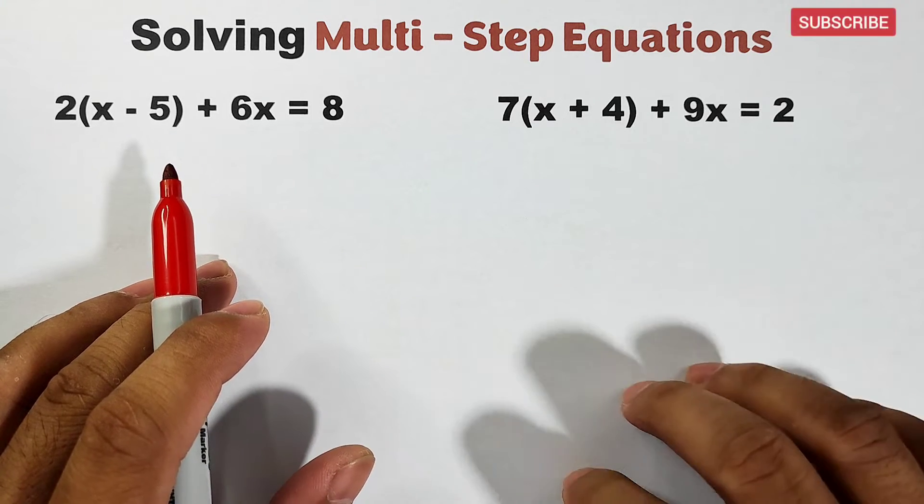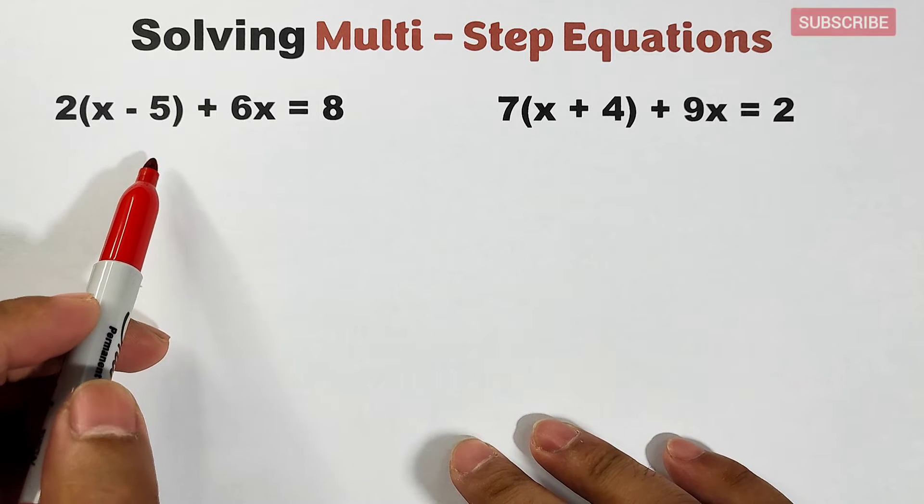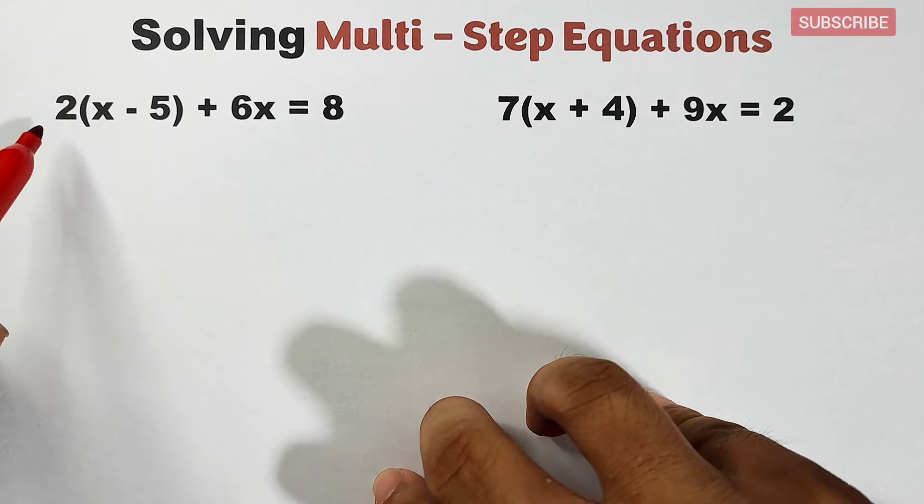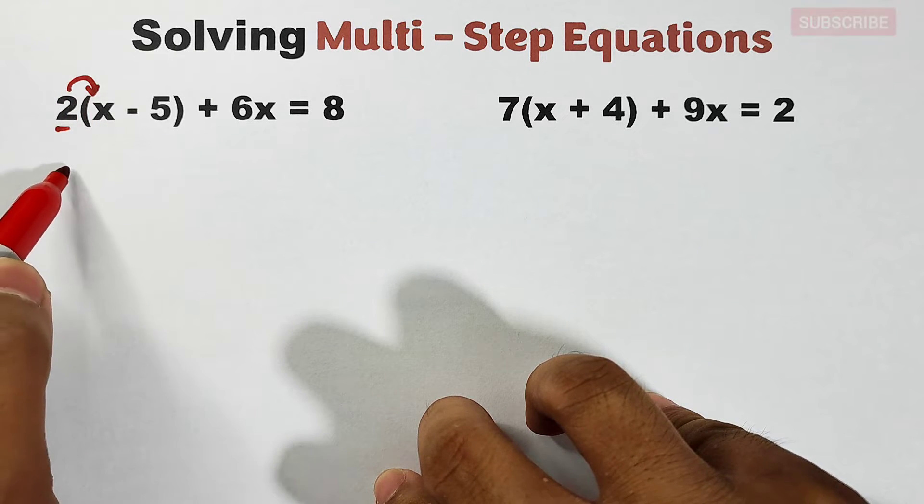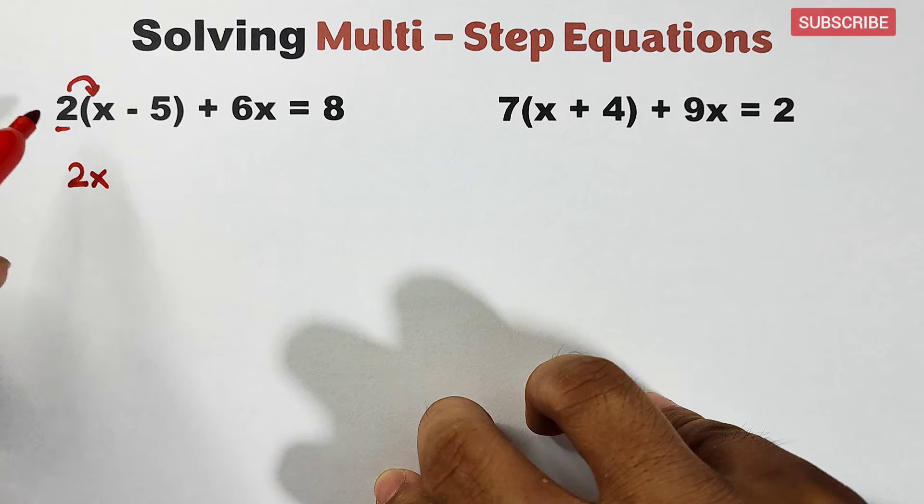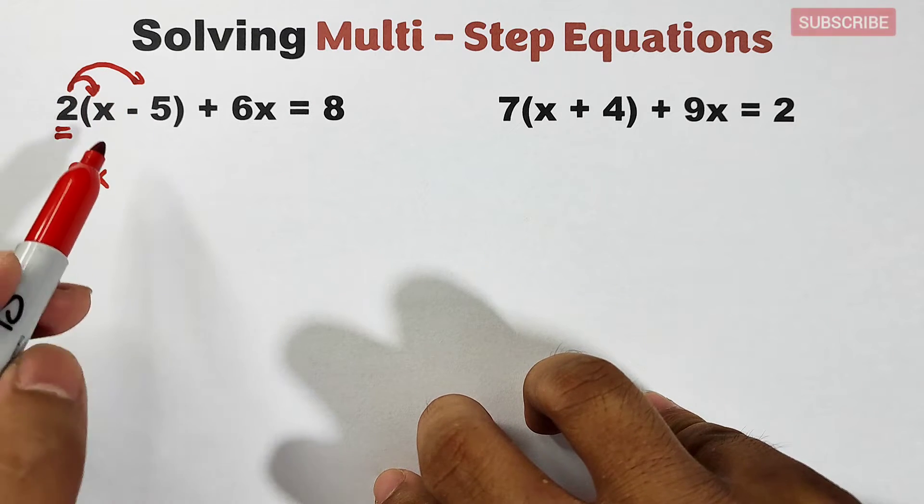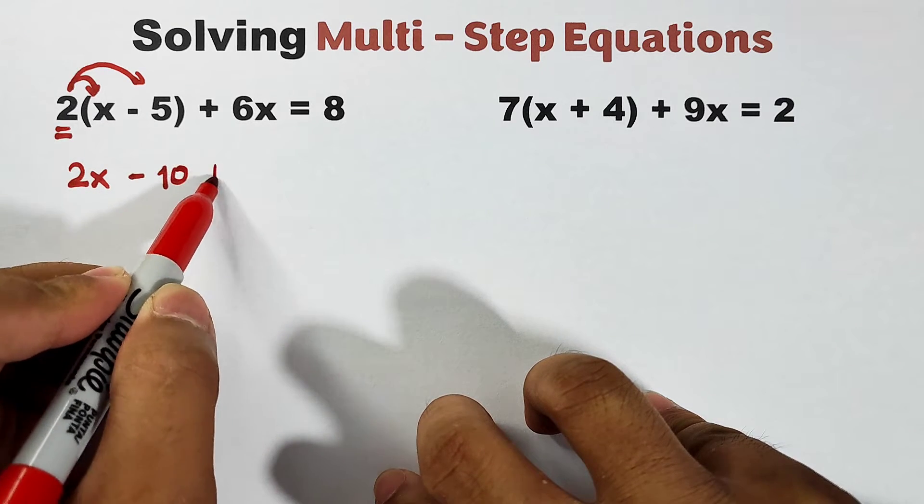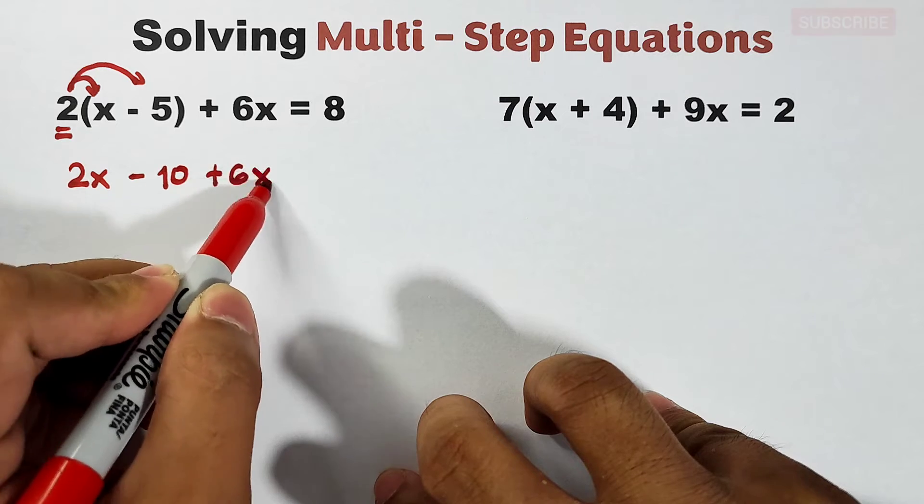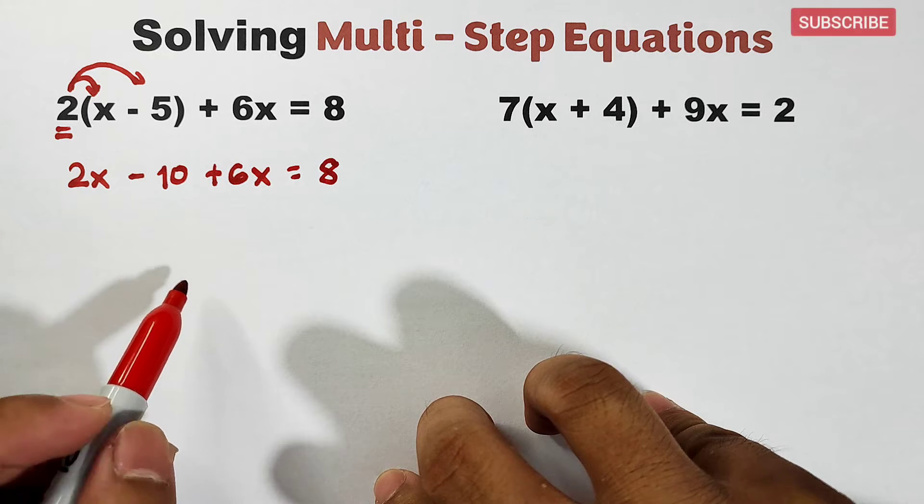First, we need to eliminate this parenthesis and simplify using distributive property. This 2 must be multiplied to x, so that is 2x. We will also multiply 2 by negative 5: 2 times negative 5 is minus 10. Then copy plus 6x equals 8. The next step is to combine like terms.